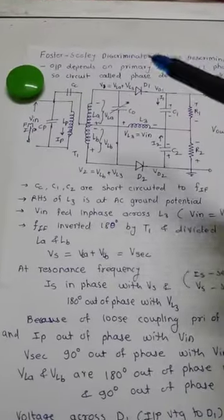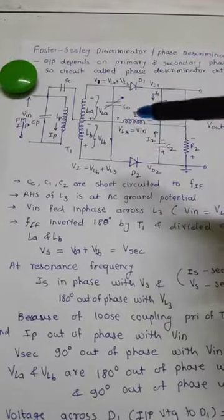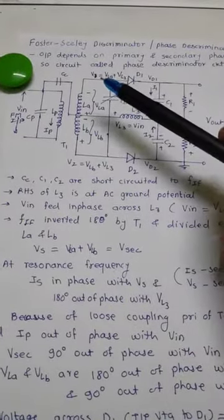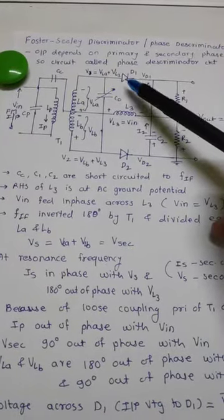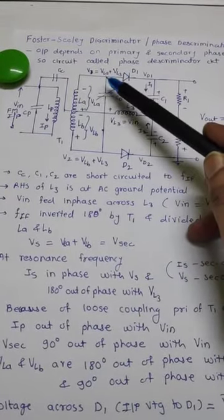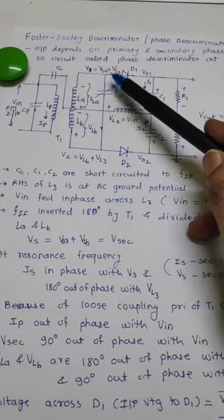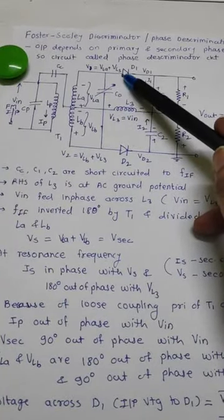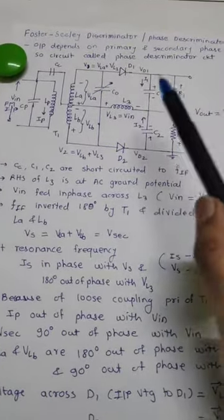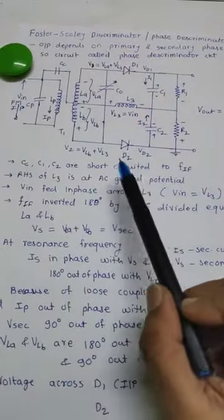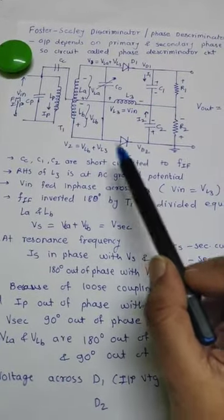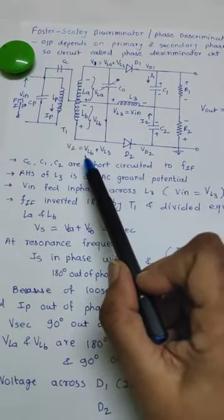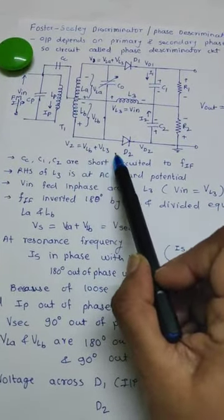Now, here, see this circuit diagram again. Because of this, the input to the diode D1 is nothing but the vector sum of VLA plus VL3. And output is VD1. Similarly, the input voltage across D2 is defined as vector sum of VLB plus VL3.